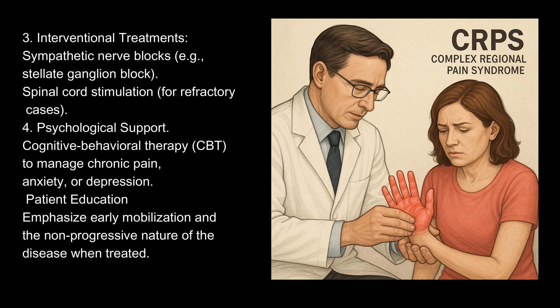3. Interventional treatments: sympathetic nerve blocks, such as stellate ganglion block, and spinal cord stimulation for refractory cases. 4. Psychological support: cognitive behavioral therapy (CBT) to manage chronic pain, anxiety, or depression. Patient education should emphasize early mobilization and the non-progressive nature of the disease when treated.